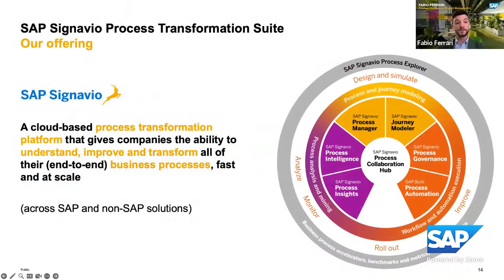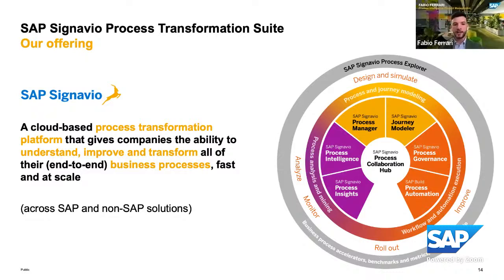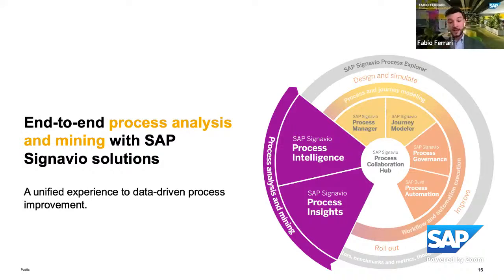SAP Signavio is a cloud-based process transformation platform composed of many different product lines with capabilities spanning from process and journey modeling, process analysis and mining, and workflow and automation execution. But what's important to understand is that SAP Signavio is not only a tool, but also provides an approach and methodology to support customers in understanding, improving, and transforming their end-to-end business processes faster and at scale. In this session, we are going to focus on the process analysis and mining capabilities.